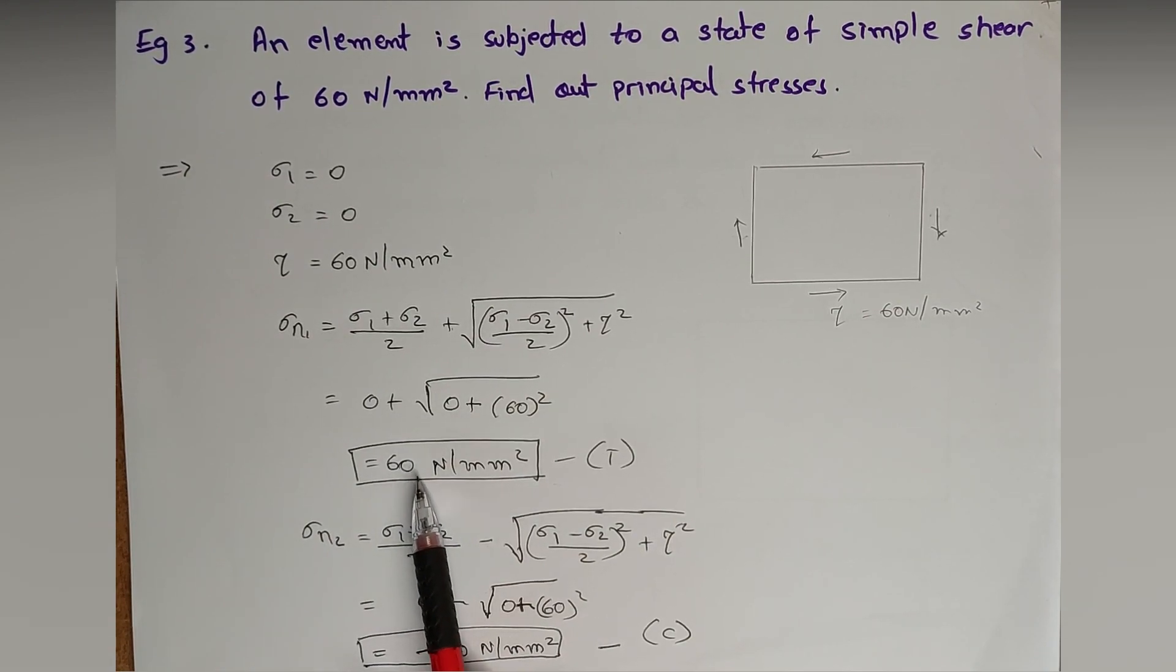As per the sign convention, if the magnitude of Sigma two is negative, then it means it is having opposite nature of that of Sigma one, that is major principal stress.